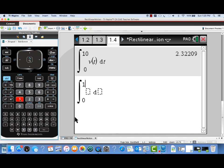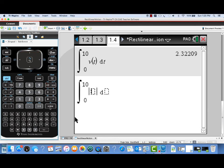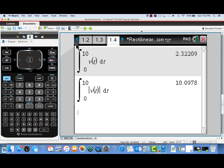Now in contrast, if we want the actual distance that the object traveled, remember it went up and down and changed directions a few times. Instead of integrating the velocity, we're going to integrate the speed, which is the absolute value of the velocity. So I'm going to integrate from 0 to 10 the absolute value of v of t dt. And this will give us the actual distance traveled by the object along the entire trip. And we can see it's much farther, 10.0978.